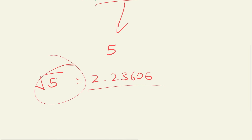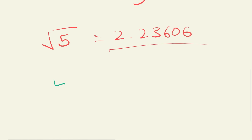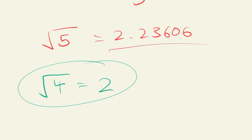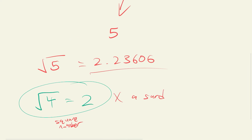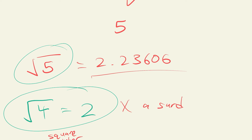That's a surd. But if I take the rational number four and square root it, I get two — a rational number — so this is not a surd because four is a square number. A surd is only when you square root a number and get an irrational number.